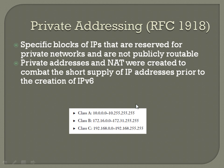You'll need to have fairly well memorized the private ranges for Class A, B, and C. Class A is 10.0.0.0 through 10.255.255.255. Class B is 172.16.x.x through just before 172.32.x.x — once you hit 172.32 it stops being private. Class C is the well-known 192.168.0.0 through 192.168.255.255. Working in the NOC, you're probably familiar with all three of these blocks.